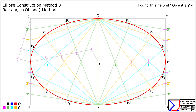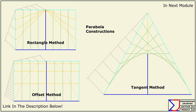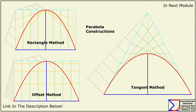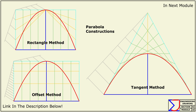That's all for this module. Up next, we will explore the construction of a parabola, another essential conic section. We will demonstrate methods such as the tangent method, the rectangle method, and the offset method to create this curve accurately. Thanks for watching — keep progressing through the series and stay tuned for more.